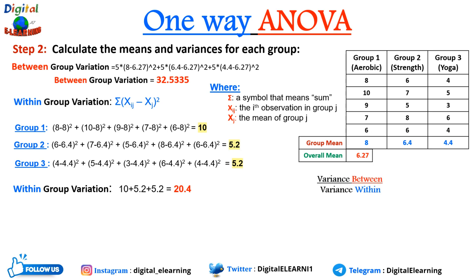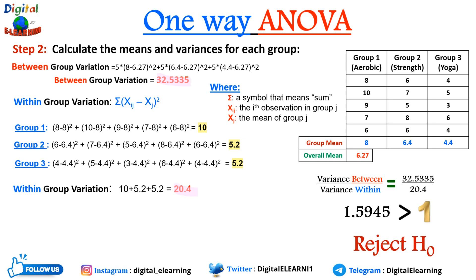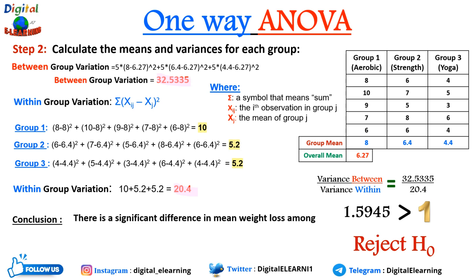Now we calculate the ratio of variance between to variance within: 32.5335 ÷ 20.4 = 1.5945. This ratio is greater than one, which means we reject the null hypothesis. This indicates there is a significant difference in the mean weight loss among the three exercise groups — we cannot say they all have the same results.